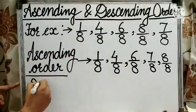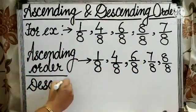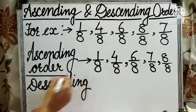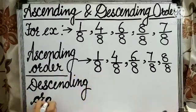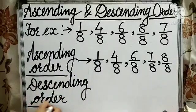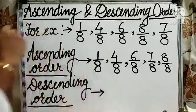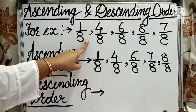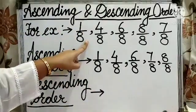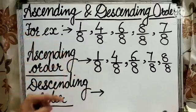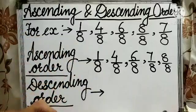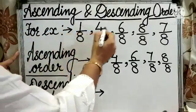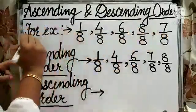Now, what is descending order? When we arrange the numbers or the fractions from greatest to smallest, the order is known as the descending order. Now again we have to check the values of numerators.